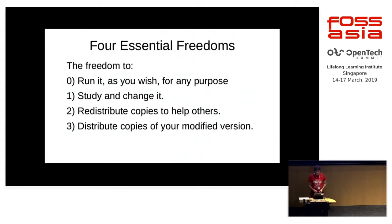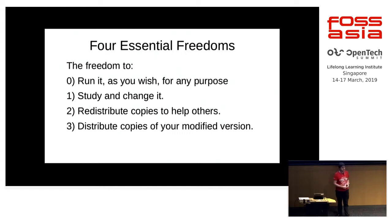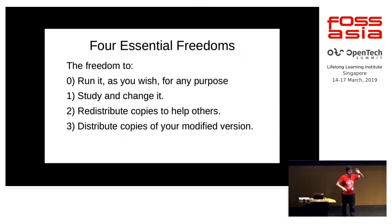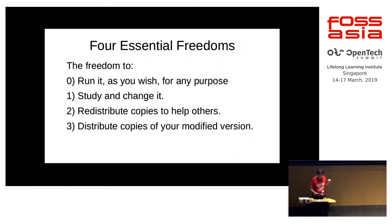Hopefully most people here have already seen this, but the four essential freedoms that the FSF identifies for free software are: to run a program any way you like and for any purpose; to study it and modify it any way you like for whatever reason; to share copies of the program to help people around you; and to share copies of the modified version of the software to further help people around you. This is different from, though related to, the open source definition and the Debian free software guidelines. But for today's talk, I'm talking specifically about the freedoms that free software is aimed at.